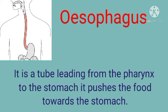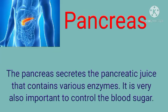The esophagus is a tube-like structure. It starts from the pharynx and goes up to the stomach, carrying food from the mouth to the stomach. In the picture, the brown tube is the esophagus, which takes food from the pharynx to the stomach.